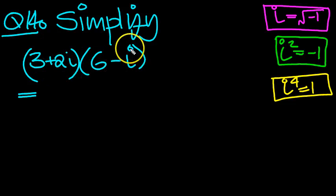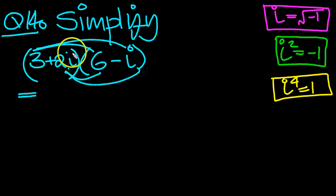Simplify 3 plus 2i in a bracket times 6 minus i in a bracket. Well, we've got to expand the brackets so we do four terms. So four lines.